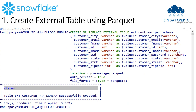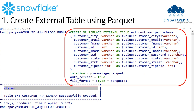Now we will see the file format and create an external table. The command is CREATE OR REPLACE EXTERNAL TABLE with the table name. We will map the respective columns, and the location is set to the stage. The file format is declared as Parquet. The command is correct and the table is examined.